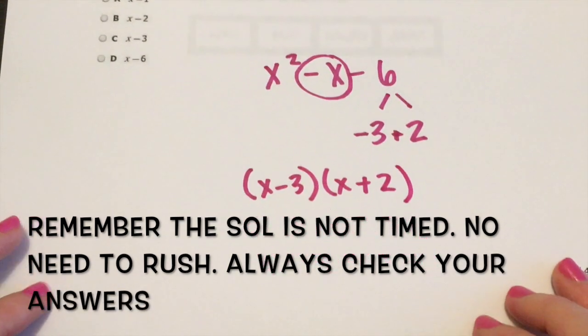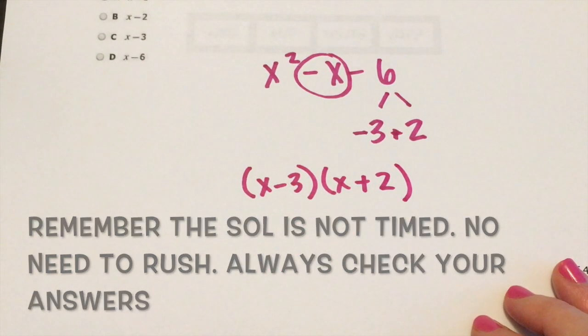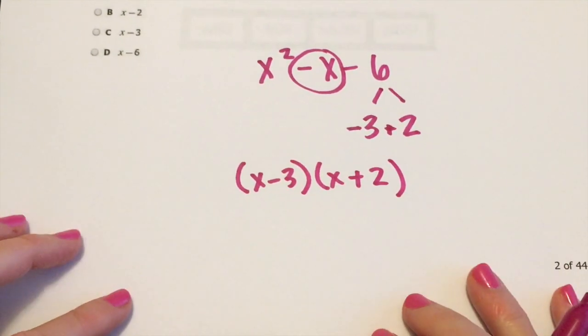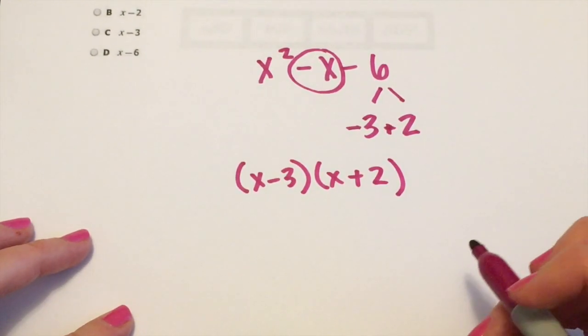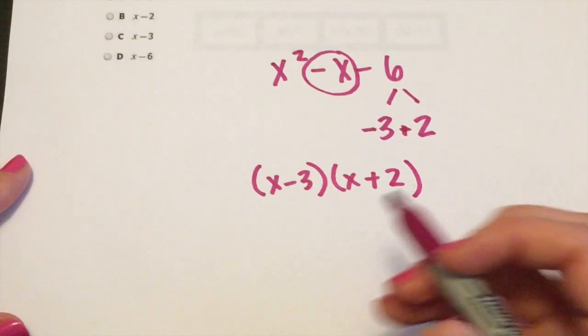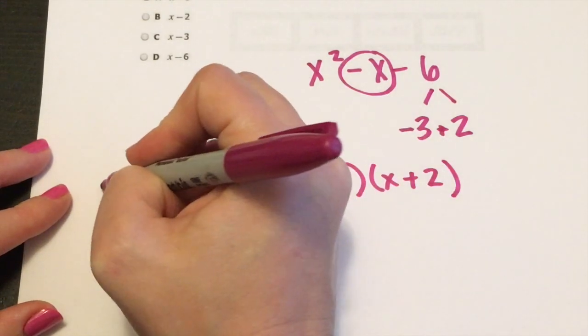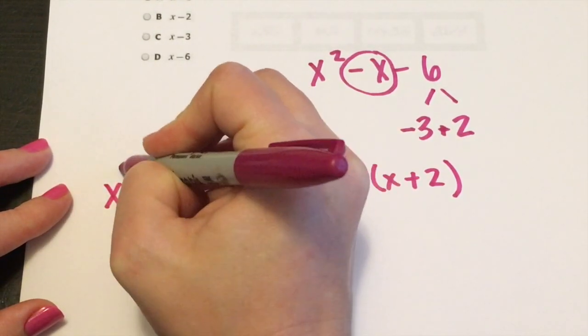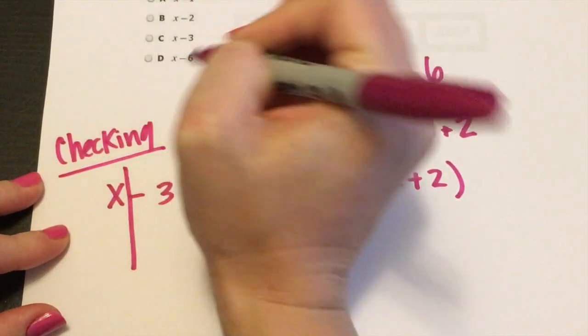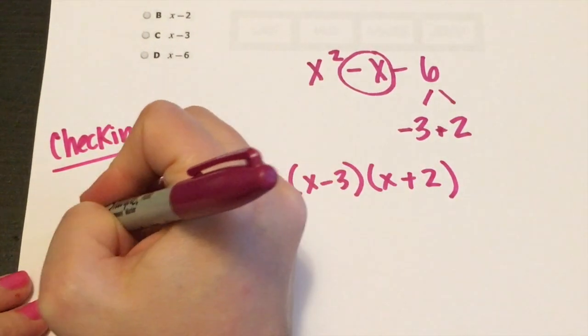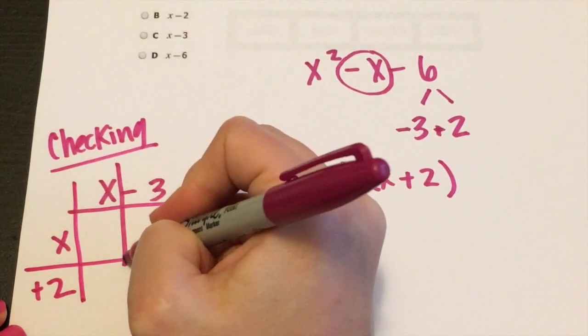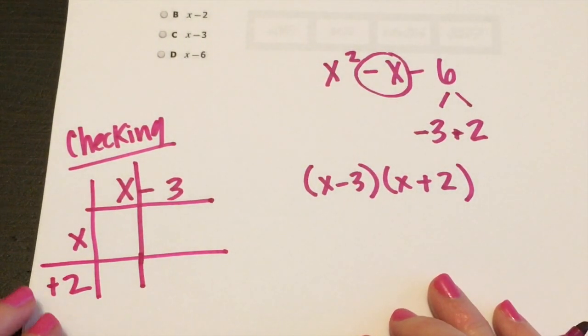Here for me, I would probably go ahead and check this just to make sure it works. You can use several different methods. There's the foil method, right? And then I use something called the box method, where I draw a box.